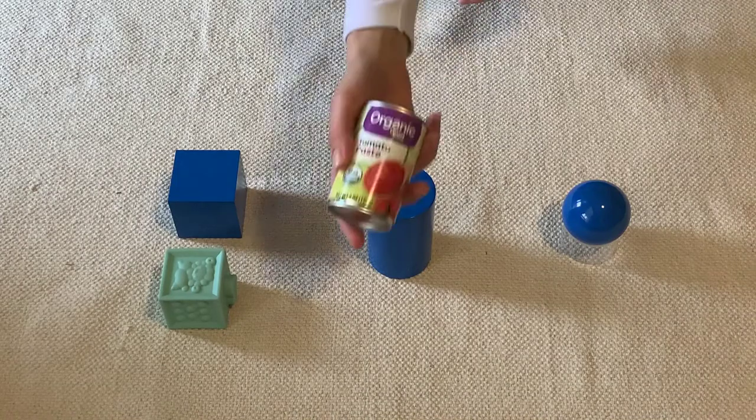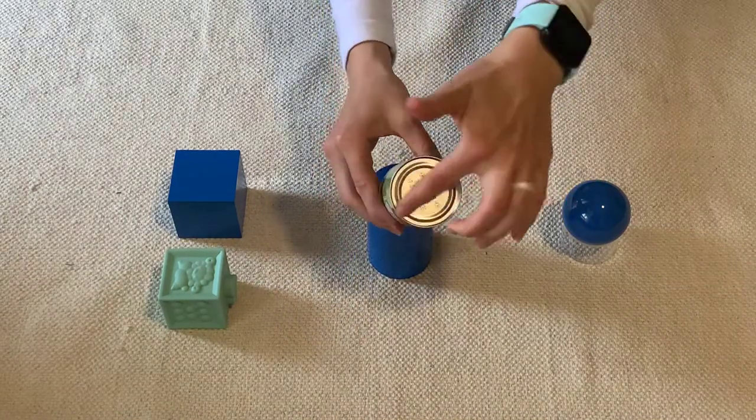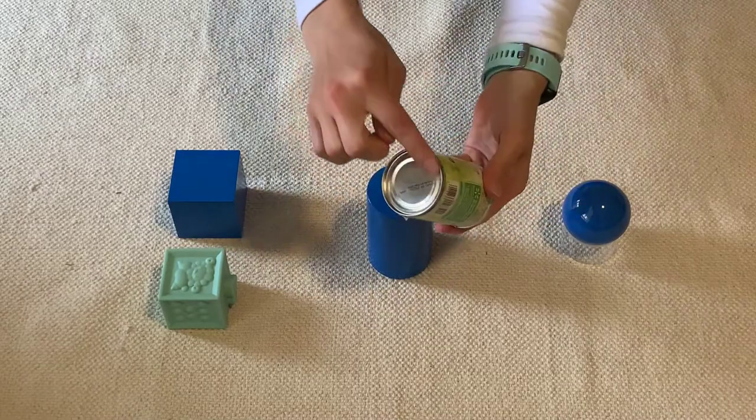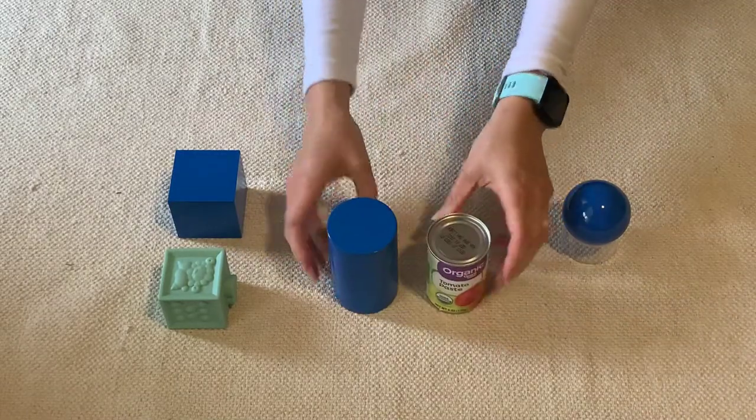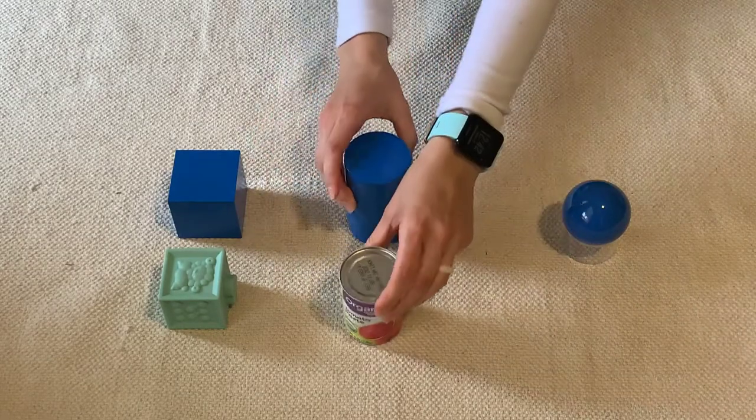Then I found this can of tomato sauce. It is a cylinder. Look, it has two circular bases, just like our cylinder.